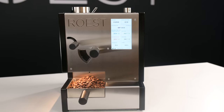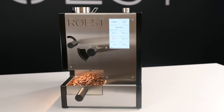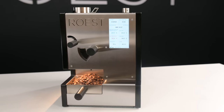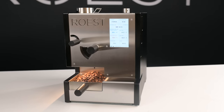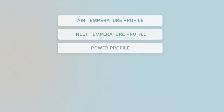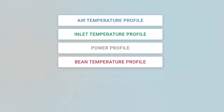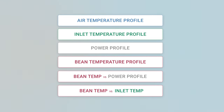We constantly work on other ways to operate the roaster that use the bean temperature to control the roasting process. The advanced profiles you can create are bean temperature profile, bean temperature versus power input, and bean temperature versus inlet temperature. Each profile type comes with different benefits and usage.